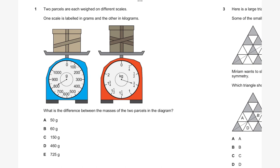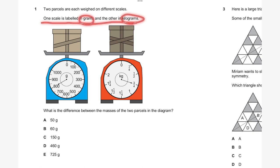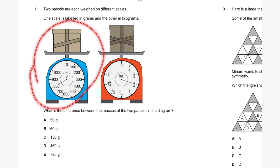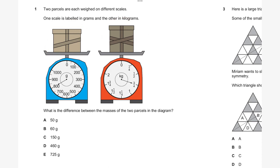Having a look at question one. It says two parcels are each weighed on different scales. One scale is labelled in grams and the other in kilograms. What is the difference between the masses of the two parcels in the diagram? As you can see, they've given us a diagram with the scales used to weigh these items. We've got parcel one and parcel two with different units. Now the key part is what is the difference — as soon as you see the word difference, you know you have to subtract. Parcel one weighs 800 grams.